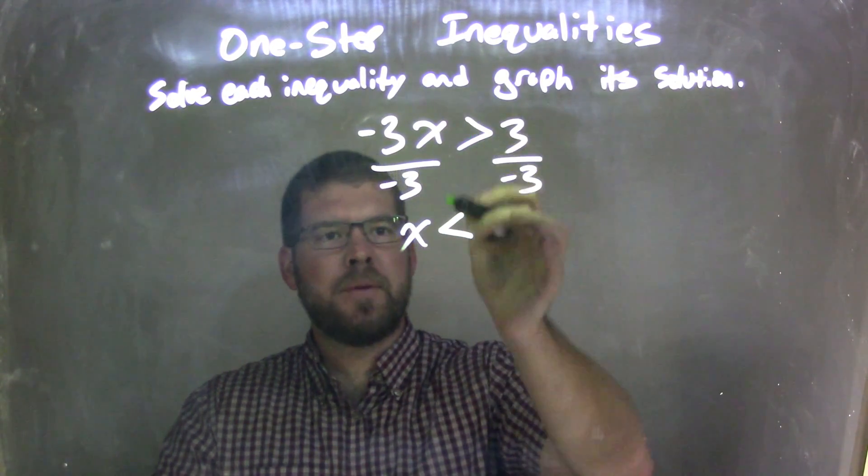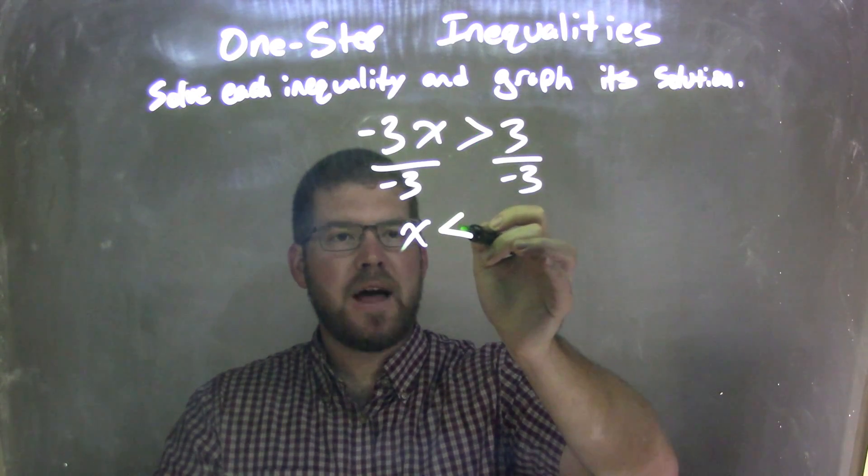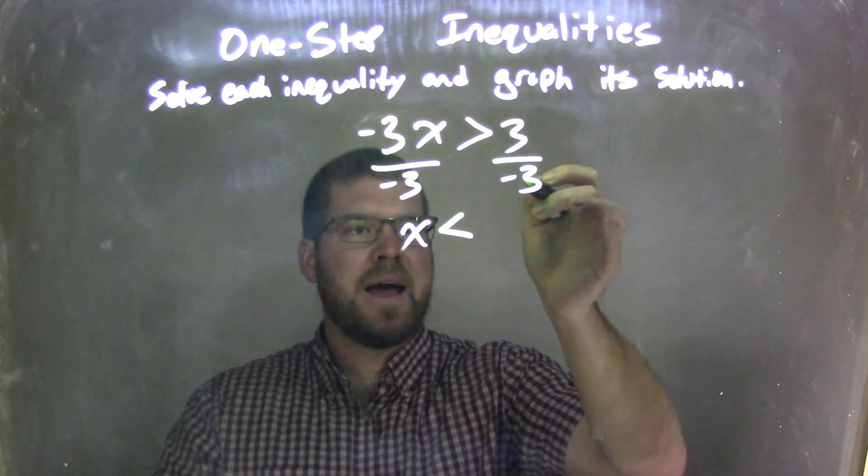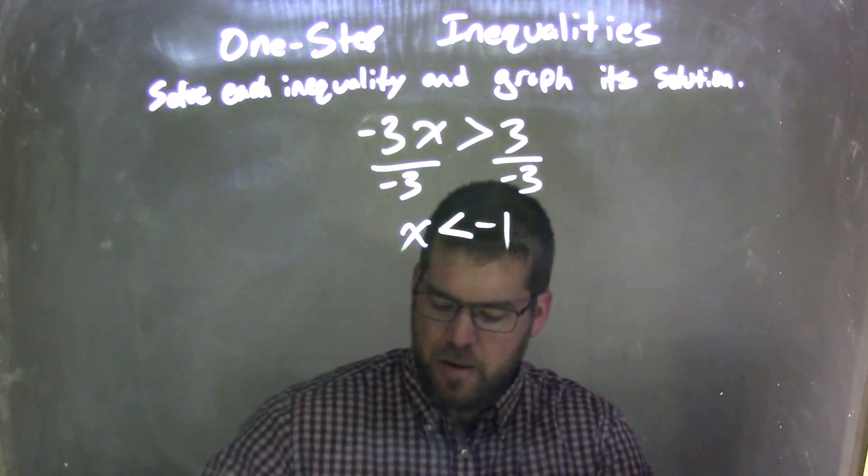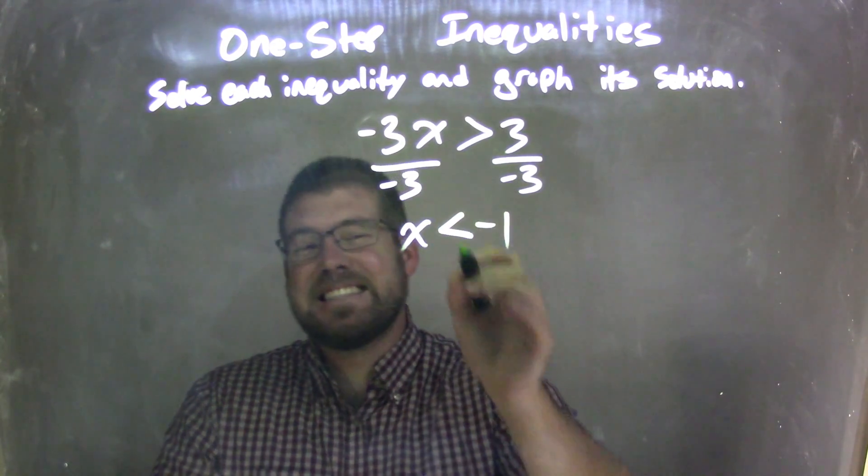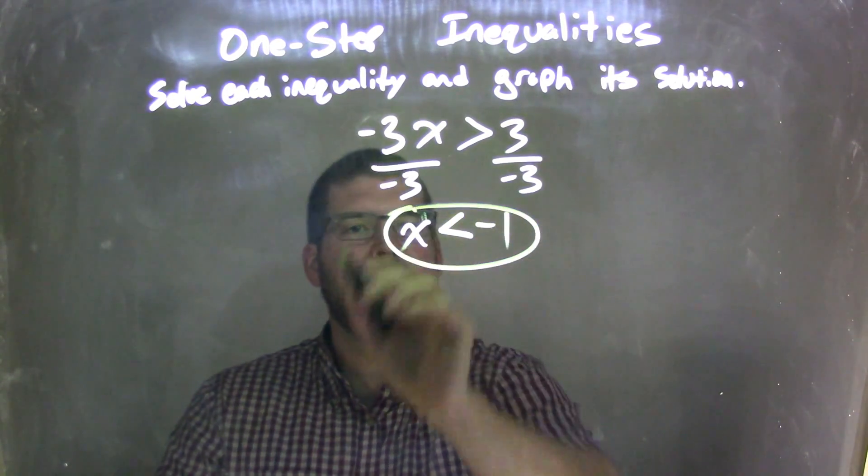Remember, I'm flipping that inequality, so if I'm greater than, it turns into a less than. Then 3 divided by negative 3 is a negative 1, and now I have my final answer of x is less than negative 1.